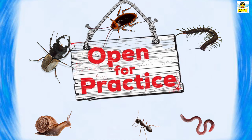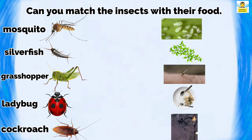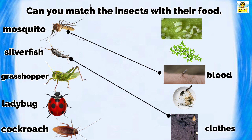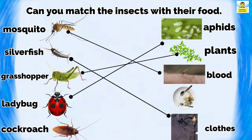Now it's practice time! Can you match the insects with their food? Mosquito sucks blood. Silverfish eat cloth. Grasshopper eats plants. Ladybug eats aphids. Cockroach eats leftover food.